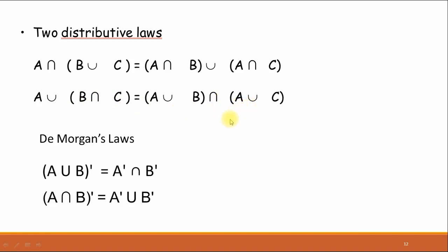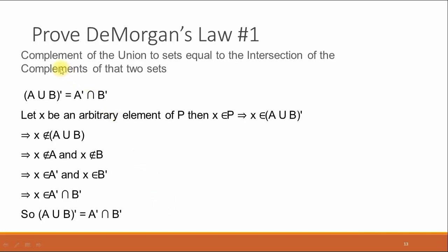Now, the most popular laws are called De Morgan's laws. There are two De Morgan laws. The first law is: A union B whole complement is equal to A complement intersection B complement. The second law is about intersection: A intersection B whole complement is equal to A complement union B complement.